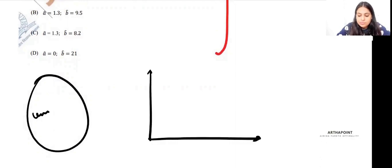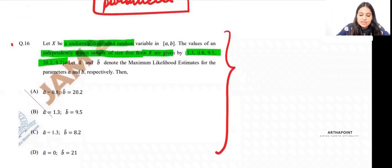Uniformly distributed means between A to B, you have uniform distribution of the population, and its PDF is 1/(B-A). All these X's are between this. I pick up 5 X's from it and these 5 X's are given: 1.3, 0.8, 9.5, 20.2, and 8.2.